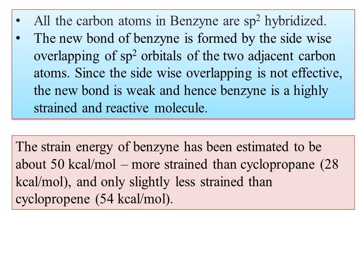Benzyne is highly strained — more strained than cyclopropane and only slightly less strained than cyclopropane. Because of angle strain, the molecule tries to open up to convert from the strained molecule to a stable molecule, which should be free from angle strain, torsional strain, and steric hindrance. Cyclopropane has a strain energy of 28 kcal per mole, meaning it is a very strained molecule.